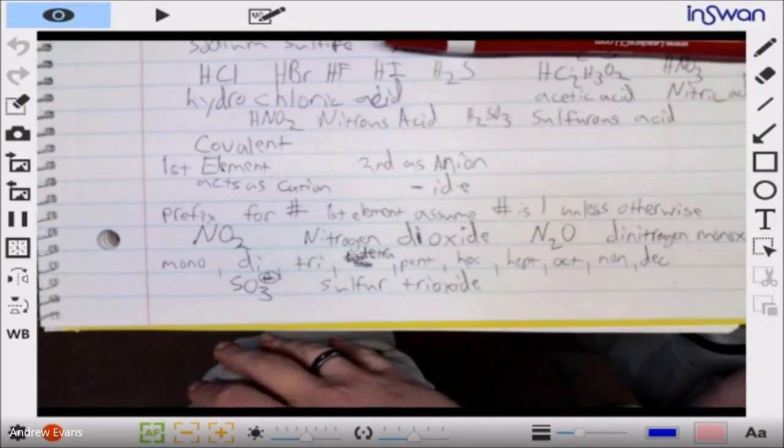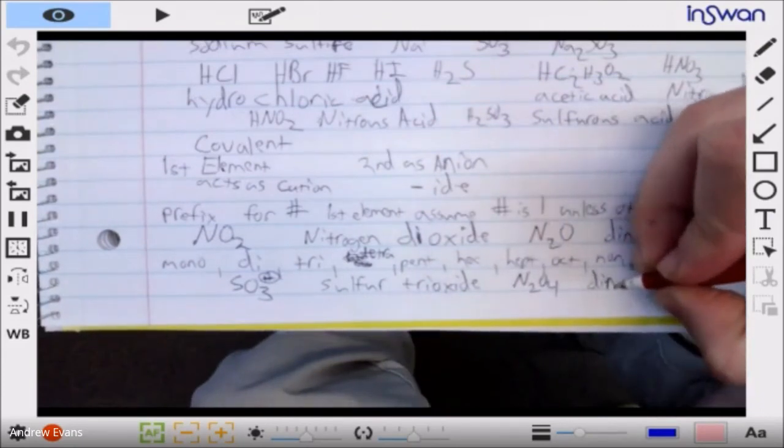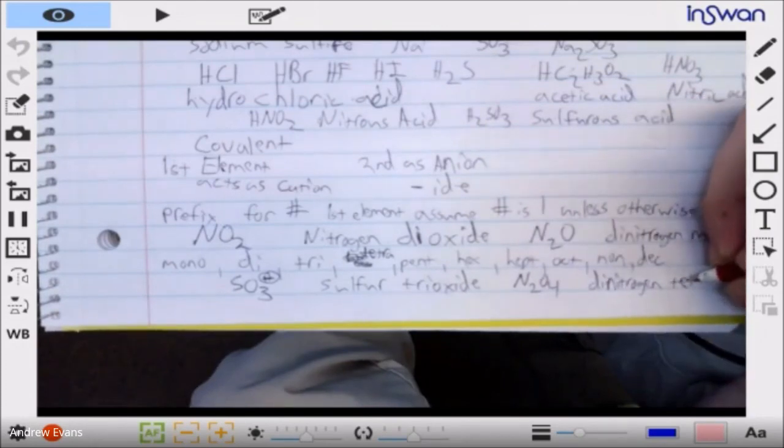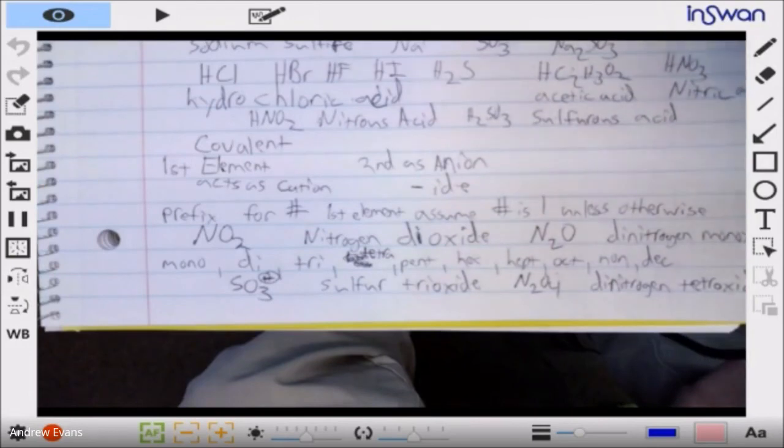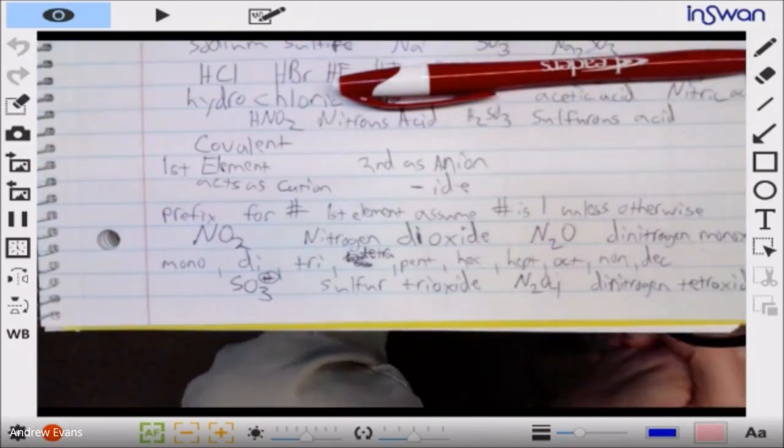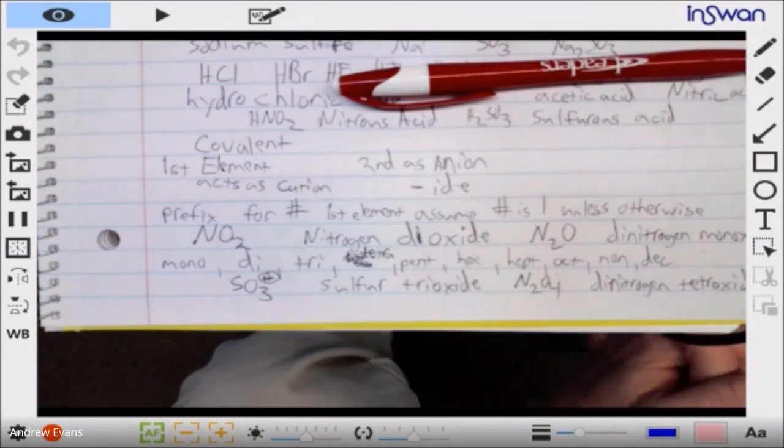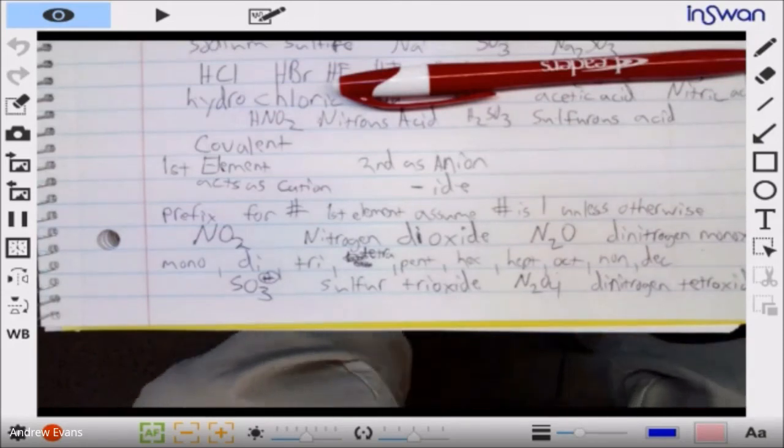Now with that in mind we can do anything you want. N2O4 would be dinitrogen tetroxide. That's the way - if we have a charge we treat it as ionic, if it's no charge we're going to treat it as covalent. That's the basics of telling the difference. If like SO3 2- that's sulfite, but SO3 neutral is sulfur trioxide. We have to look - the charge or lack thereof tells us whether we're dealing with a covalent molecule or an ionic molecule. So NO2 is nitrogen dioxide, NO2 1- would be nitrite.